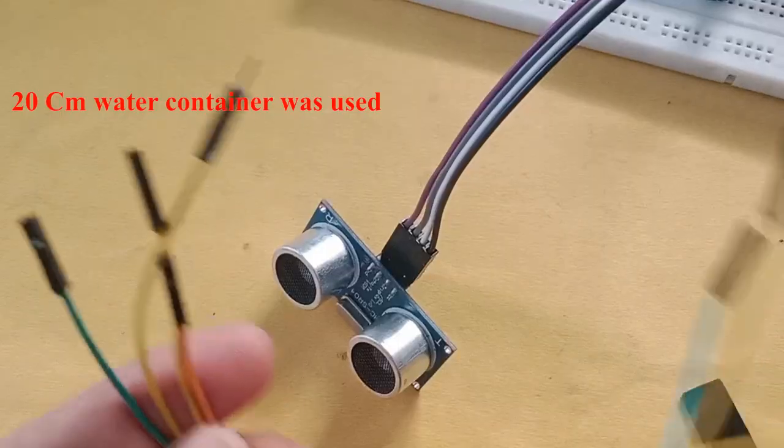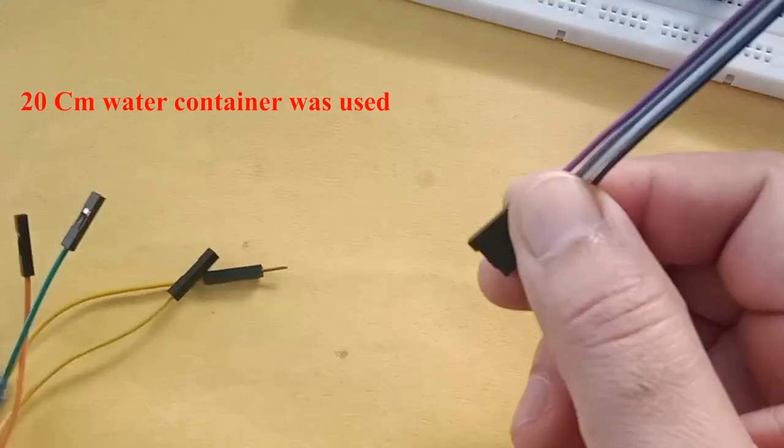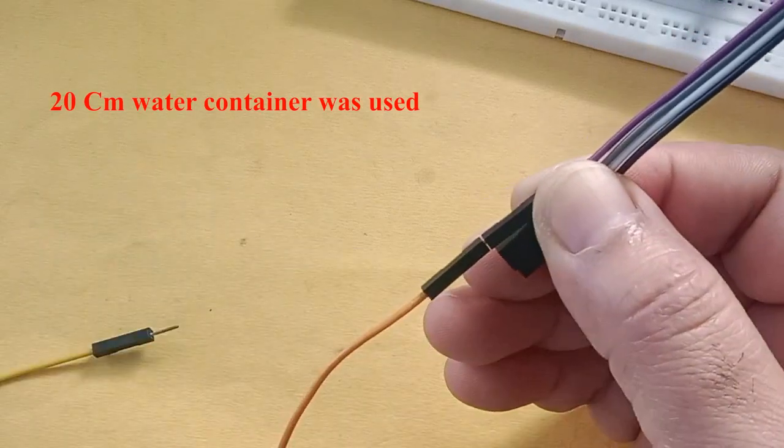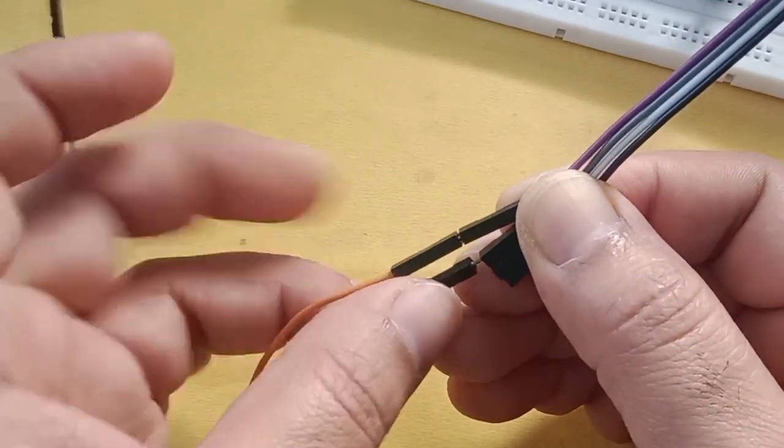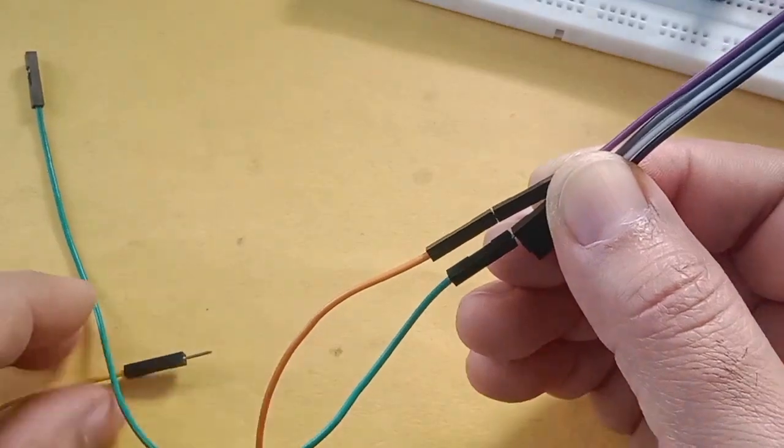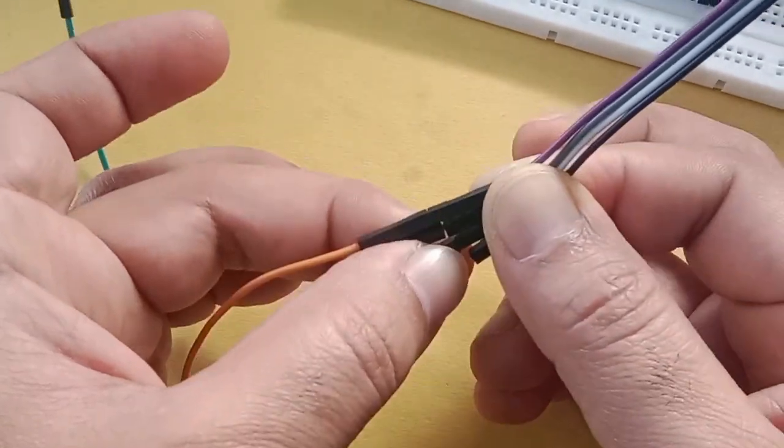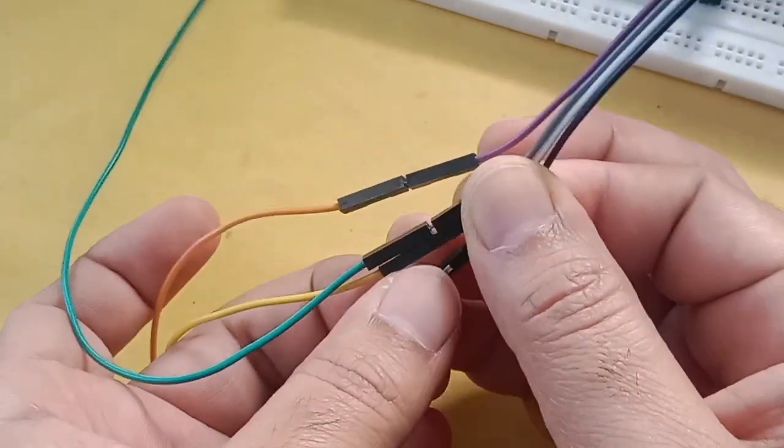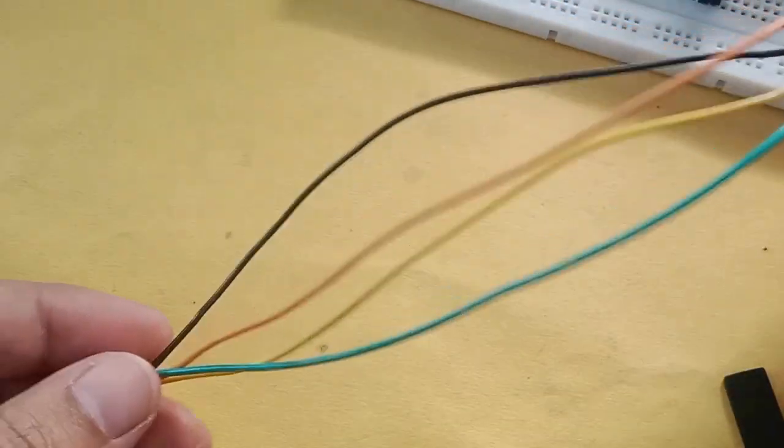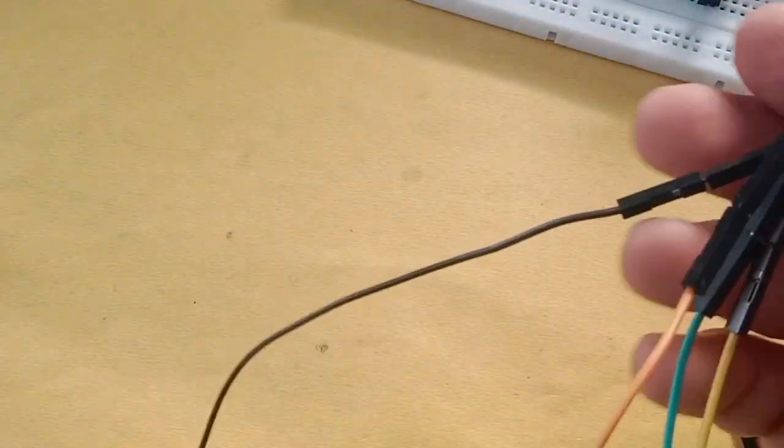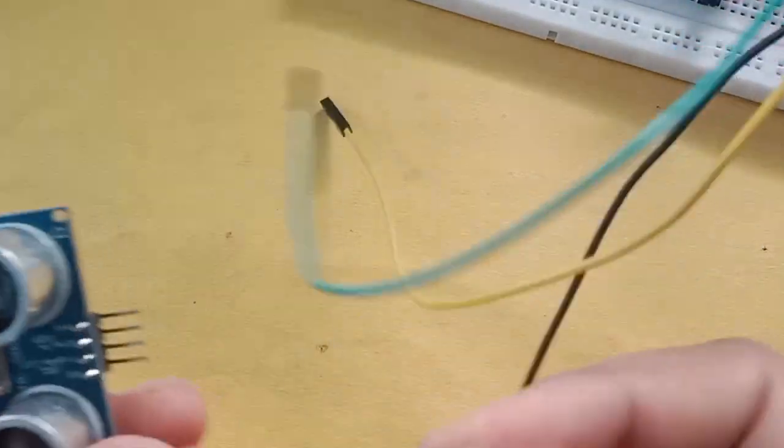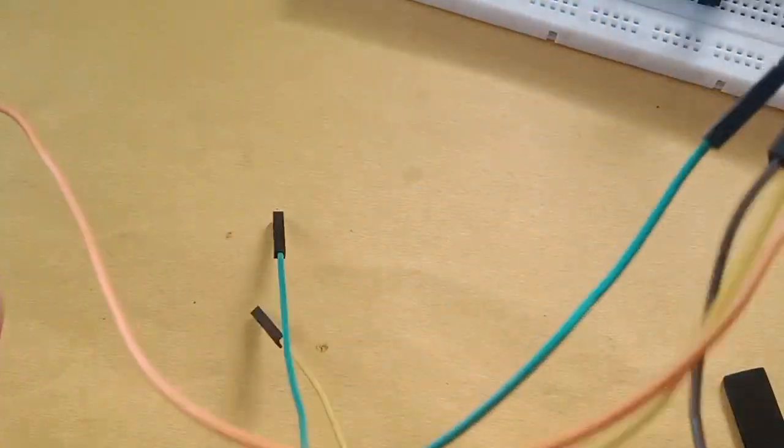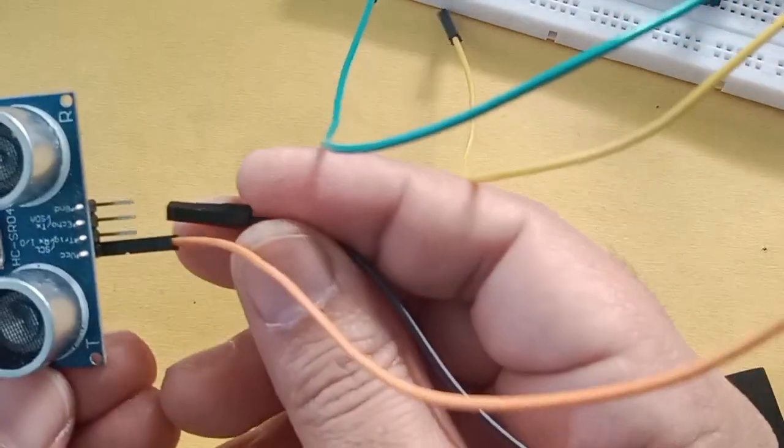Because I am using 30 inches jar, the water container, I need to extend the wire. Otherwise it will not fit on top of the bottle. I have taken male to female wires. If you are using a small container, you don't have to do it. But my container is little big, so I had to extend the wire. Everything will remain same, I am just extending the wire.